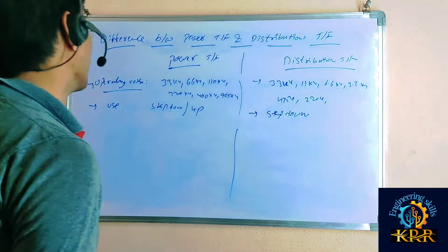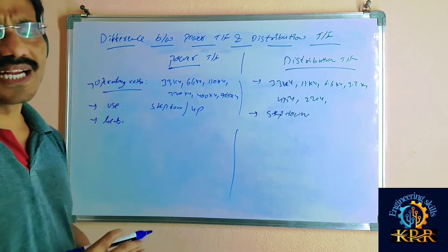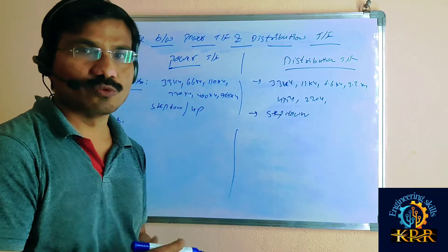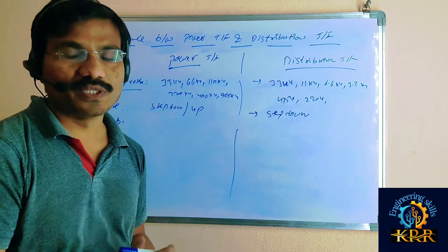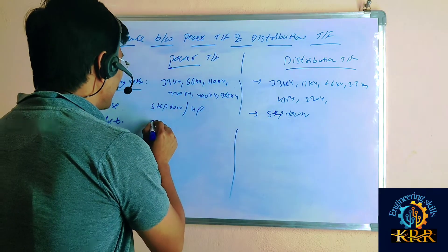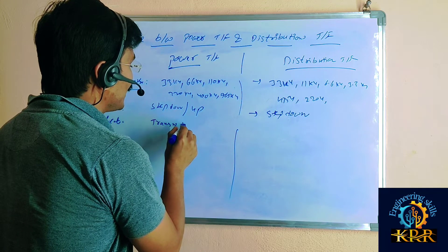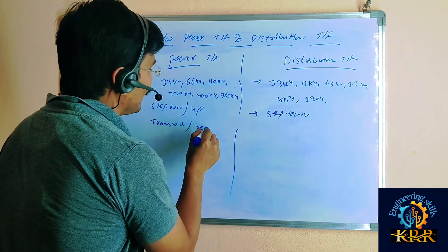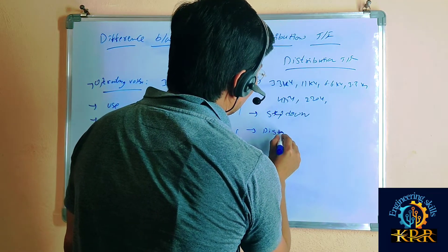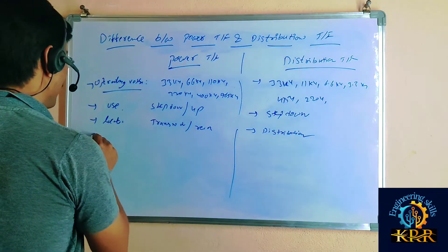If you go for location, the power transformer is used at the transmission end and the receiving end. But the distribution transformer is used in the distribution area.